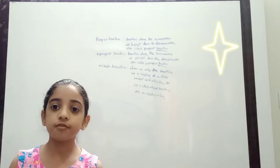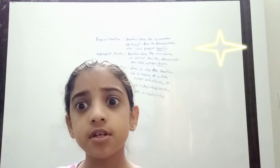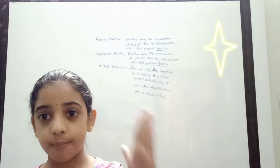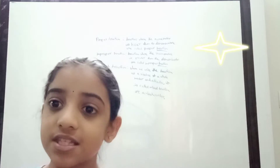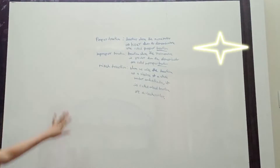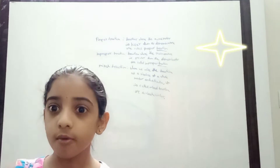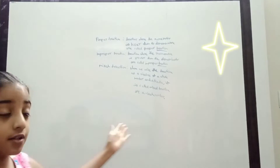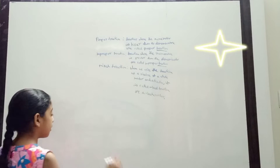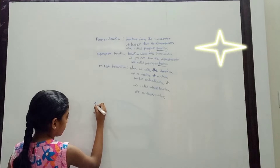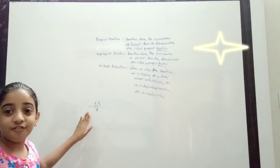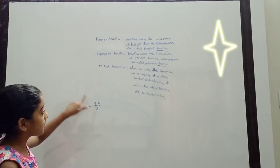Now we should convert an improper fraction to a mixed fraction. We also call the mixed fraction a mixed number. Keep in mind, you can write mixed fraction or even mixed number. What we are learning now — converting improper fraction to mixed fraction — is very easy. For the exam, you should write the formula; they will give 1.5 marks for the formula. For example, they have given 15 by 7. This is an improper fraction because the numerator is greater than the denominator.